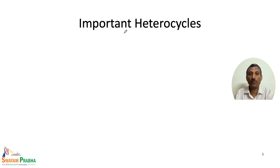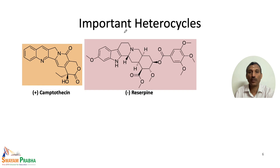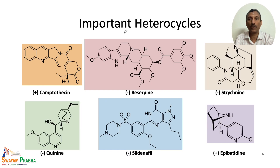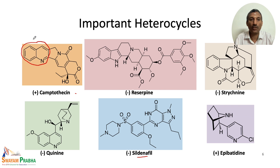Let us look at some important heterocycles in drugs: camptothecin, reserpine, strychnine, sildenafil (Viagra), epibatidine, and quinine are examples. For instance, we have a pyridine ring — this is basically the quinoline structure, where a benzene ring and a pyridine-like heterocyclic ring are fused together. This arrangement is called quinoline.